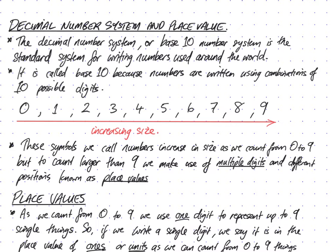We call it base 10 because numbers are written using combinations of 10 possible digits. Hopefully you're familiar with counting - this relies on understanding how to count in order. The 10 possible digits are 0, 1, 2, 3, 4, 5, 6, 7, 8, and 9, written left to right in increasing order of size.